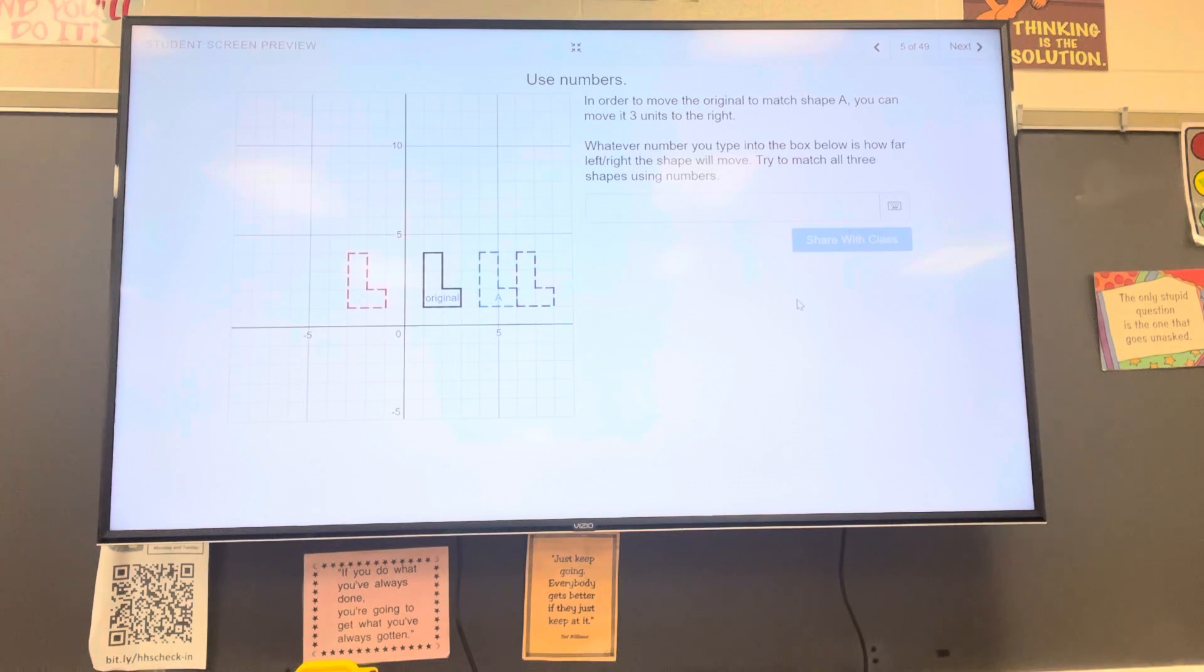Slide five. In order to move the original to match shape A, can you move it three units to the right? So if I go ahead and type in here three, you can see the shape moves to the right location. If I want to go to the left, I type minus—how many is that? One, two, three, four. Minus four, that will take it to the left.